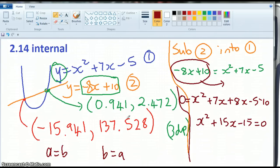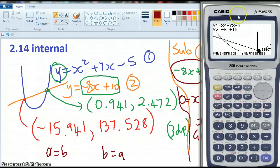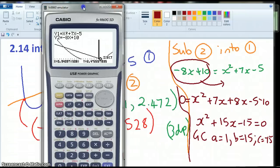Now I'm going to write, graphics calculator, a equals 1, b equals 15, and c equals negative 15. So I go into my calculator. I'm allowed to use my calculator now.